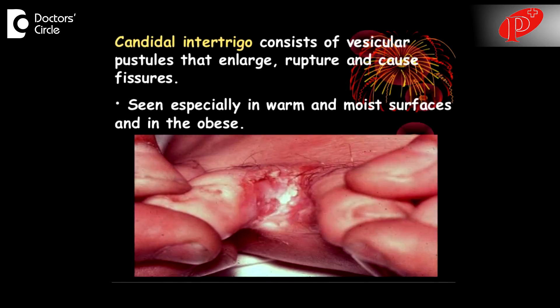Intertrigo is an infection which occurs between the folds, like underarms, between the thighs, in the love handles, or below the breast. These are called intertrigo. It could be both bacterial and fungal, and the fungal form is called Candida.